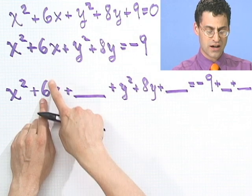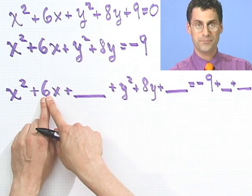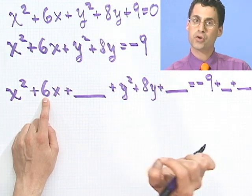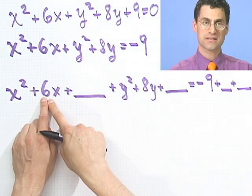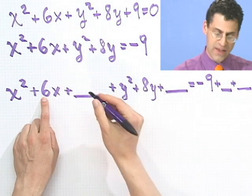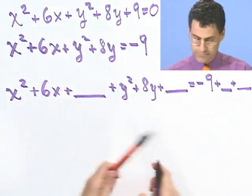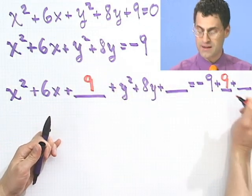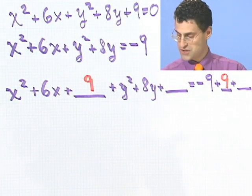Once we did that, I then take a look at the coefficient on the x term alone. In this case, it's 6. I take half of it and square it. Half of 6 is 3. If I square it, I get 9, and that's what I add here. So I add 9 here, and thus I have to add 9 here in order to make that thing, an equation, still true.